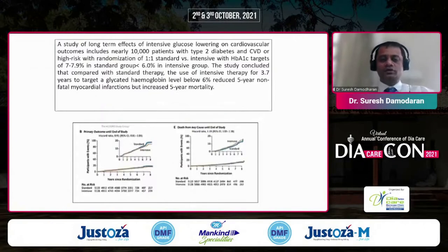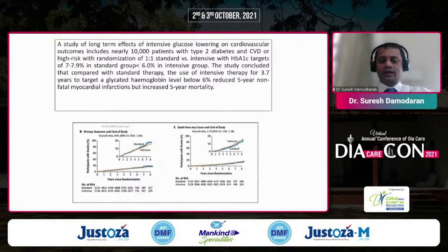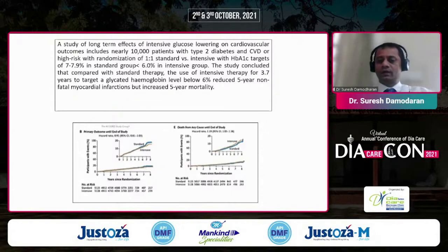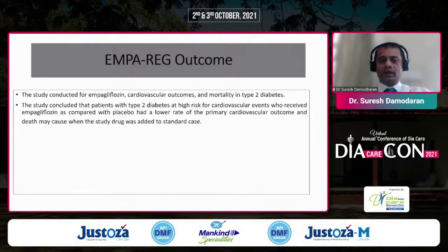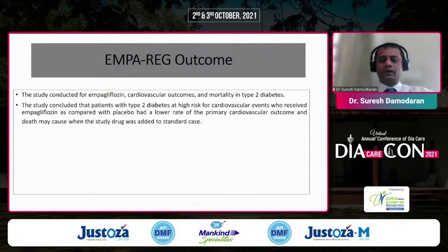The ACCORD trial with almost 10,000 patients doing intensive glucose lowering concluded that the use of intensive therapy targeting HbA1c below 6 had a 5-year non-fatal myocardial infarction benefit, but increased 5-year mortality. So not necessarily all tight sugars are good.